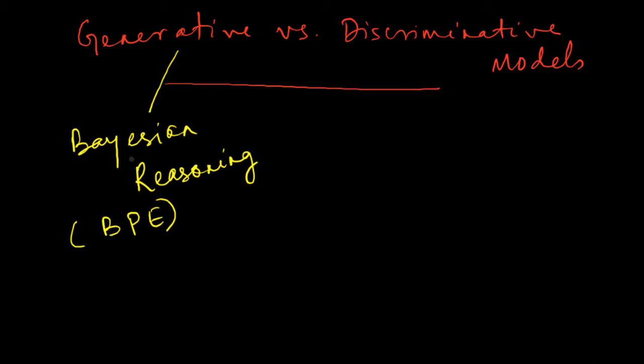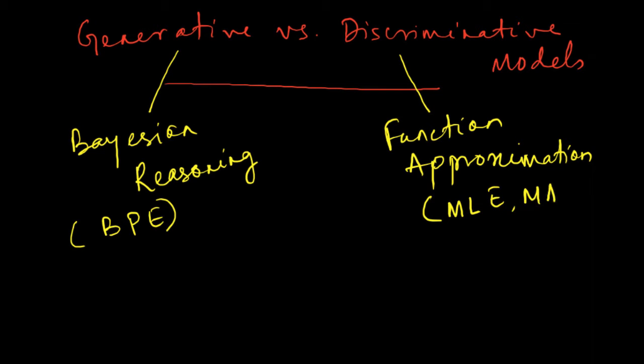It is lot more powerful than just purely discriminative models whose function is only to approximate a given function. Discriminative models are totally into function approximation and essentially we have the maximum likelihood estimator and the MAP estimator which fall in this function approximation category.